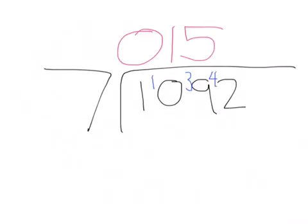For the last bit, you do 7 divided by 42, which everyone should know is 6.